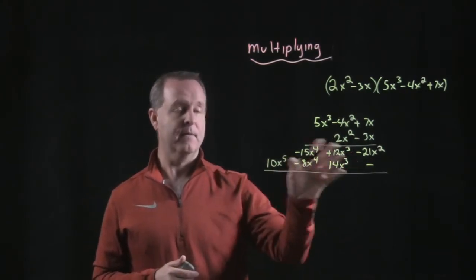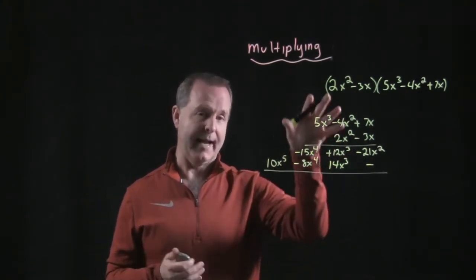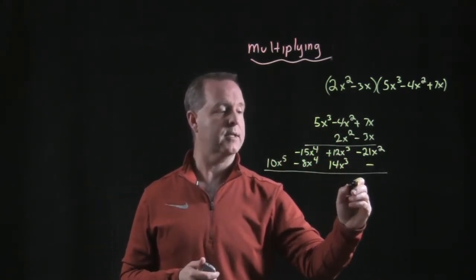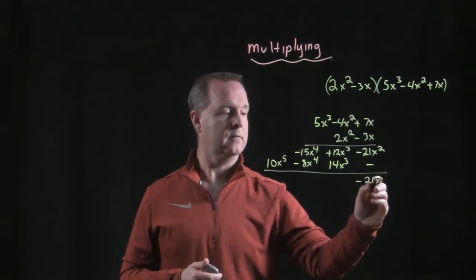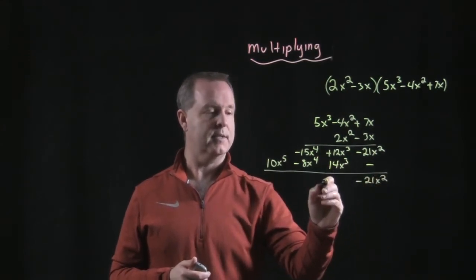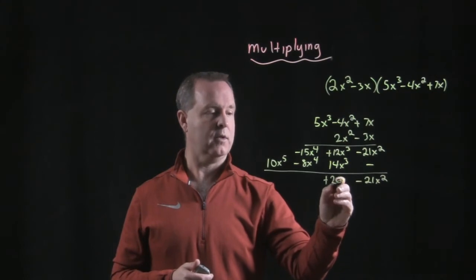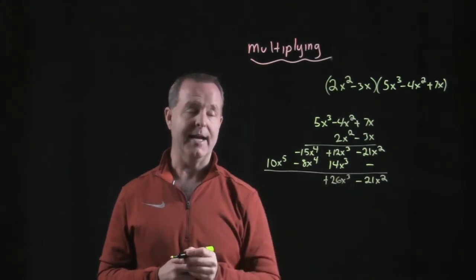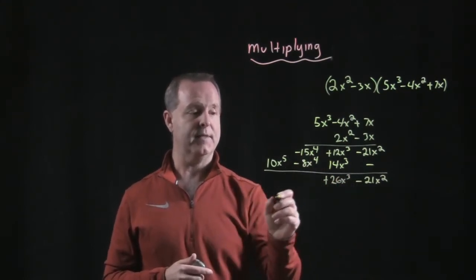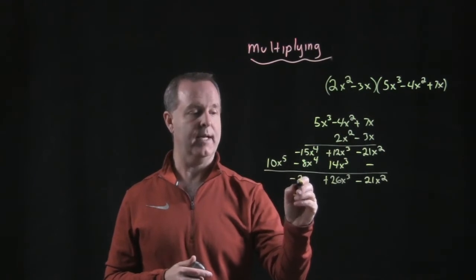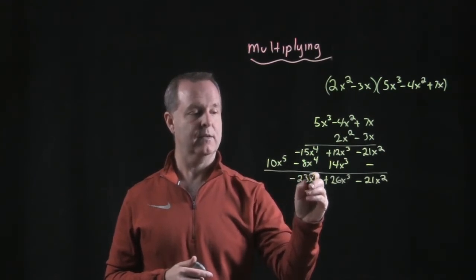Then from there, we're able to collect our terms by adding vertically. So negative 21x squared plus 26x cubed. My x to the fourth, I have negative 15 and negative 8 of them. So negative 23x to the fourth.